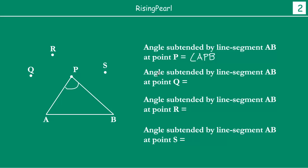Now, Dostho, similarly, our next question hai: angle subtended by line segment AB at point Q. So, similarly, Dostho, this is our line segment AB. What is the angle that our line segment has at point Q? Matlab ki, Dostho, if we basically look in this direction and we look at the line segment AB, what will be the angle that this line will have at point Q? We have to simply join AQ and BQ. Then, Dostho, this angle basically gives us the line of sight — the angle subtended by AB at point Q, which is angle AQB.